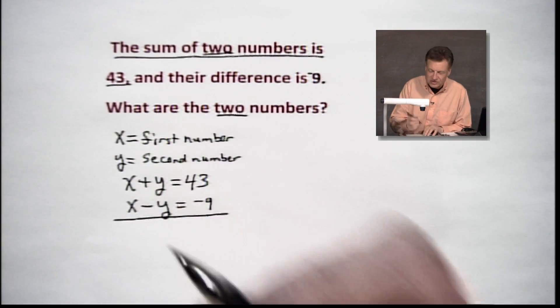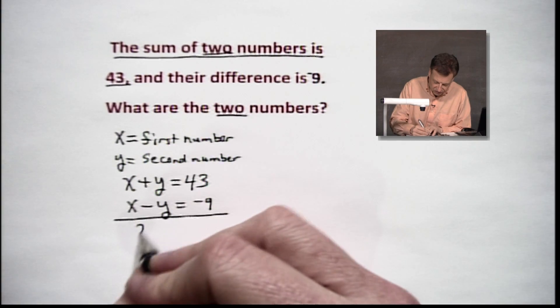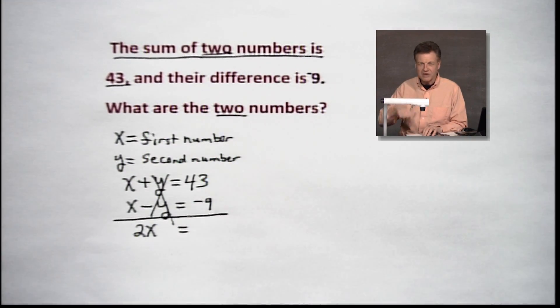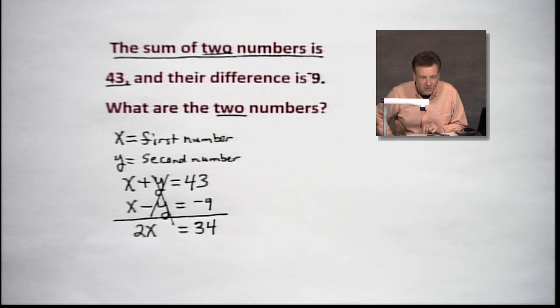We're going to add these two equations together, which is going to give me X plus X. Don't say it's X. Some of you will. But it's 2X. And on the other side of the coin, say goodbye to those Ys, by the way. That's good news. On the other side, we've got 43, and we're going to subtract 9 from that. I believe it's going to give us 34.